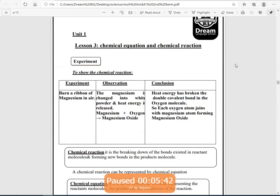We can conclude from here that the heat energy has broken the double covalent bond that exists between the oxygen molecules. So, each oxygen atom joined a magnesium atom forming magnesium oxide molecule.